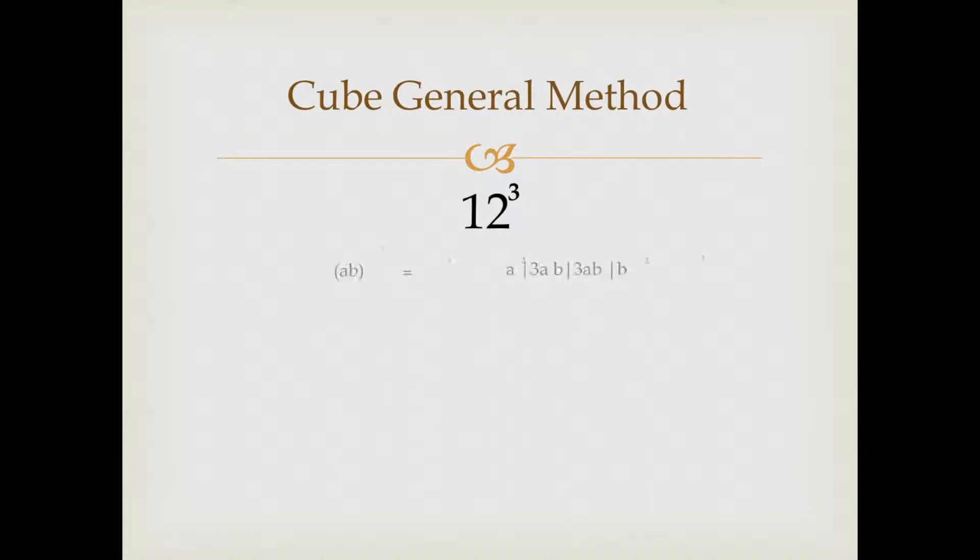In order to find this out, we will apply this formula. This formula is very easy. We are considering 12 as ab. As you can see, (ab)³ = a³|3a²b|3ab²|b³. It's a very easy combination to remember.